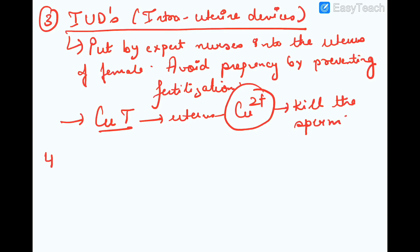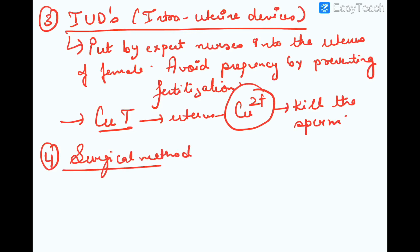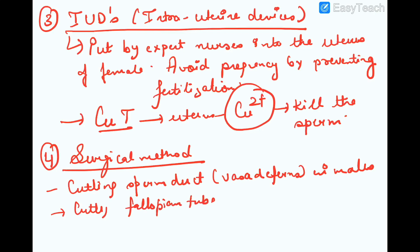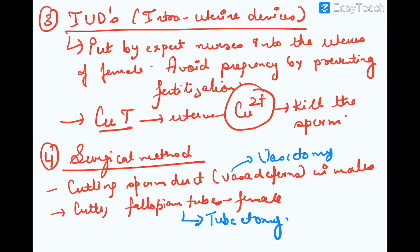The fourth contraceptive method is the surgical method. It includes cutting of the sperm duct or vas deferens in males, which is known as vasectomy, and cutting of the fallopian tubes in females, which is known as tubectomy. These are some of the contraceptive methods which help to prevent pregnancy.